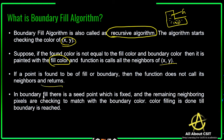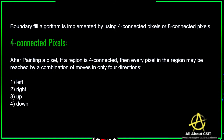Suppose if the pixel found inside the polygon has a color equal to the fill or the boundary color, then we don't need to call the function — just return, because the green color is already there and there's no need to override the color. In a boundary fill there is a seed point which is fixed, and the remaining neighboring pixels are checked to match with the boundary color, and color filling is done until the boundary is reached.